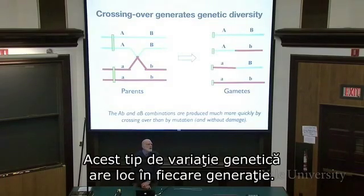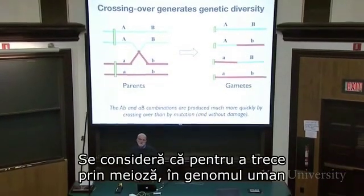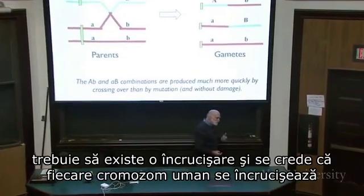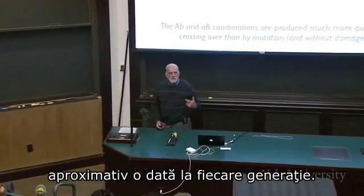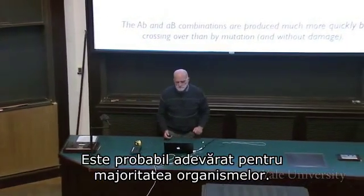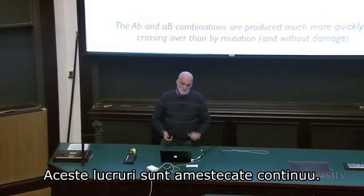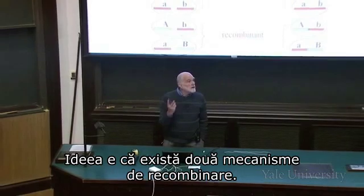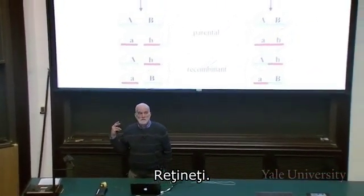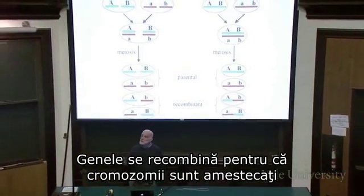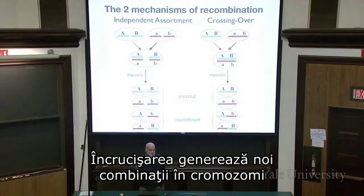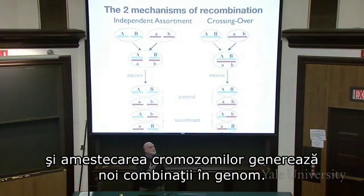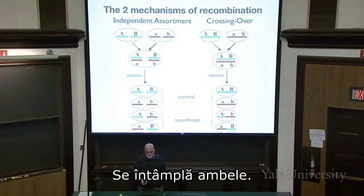This kind of genetic variation is going on in every generation. For the human genome, every chromosome experiences roughly one crossing over event per generation. There are two mechanisms of recombination: genes recombine because chromosomes get shuffled — chromosome assortment generates new combinations within the genome — and because of crossing over, which generates new combinations within chromosomes. Both things are going on.